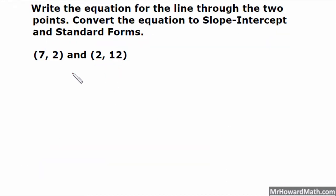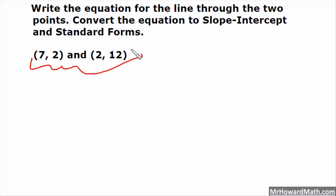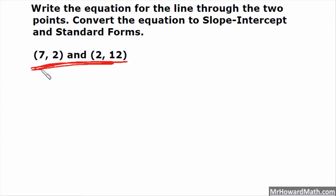In this next example, they want the line written in all three forms: point-slope, slope-intercept, and standard form, but they only give me a set of two points. They don't give me any other information. So I am going to need to find the slope from that given information.